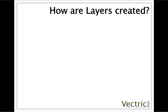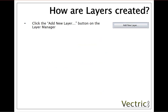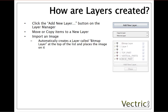So how are layers created? There are a number of different ways. Firstly we can add a new layer from the menu. When we move or copy items we have the option to add them to an existing layer or to create a new layer. When we import an image, a new bitmap layer will be automatically created and that image placed onto it.